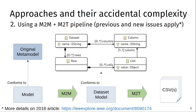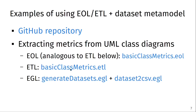You can go further and do a pipeline: take a model conforming to its original metamodel, apply a model-to-model transformation to what I call a dataset model. This dataset model conforms to a metamodel where datasets have rows that have cells corresponding to certain columns — basically representing a dataset as model elements. From there, you do a model-to-text transformation to generate a CSV file. This approach has the same problems as the previous one and may add some new issues; for more details, see the 2018 article.